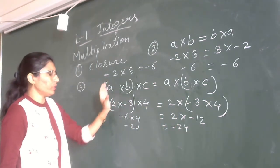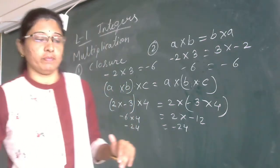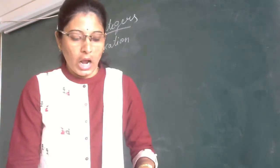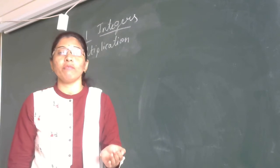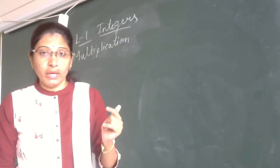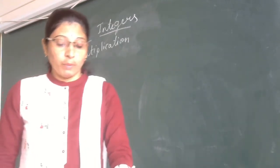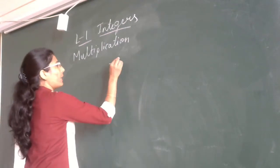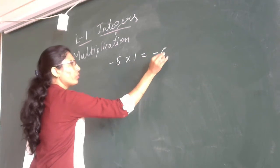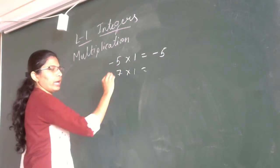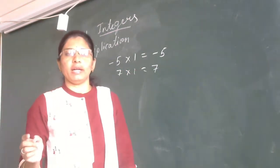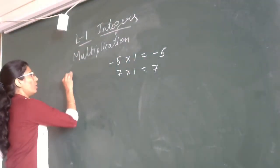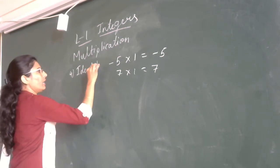The fourth property is identity property. That means if any integer is multiplied with 1, the result will be the integer itself. The product of an integer and 1 is the integer itself. For example, minus 5 into 1 is minus 5, and 7 into 1 is 7. Any integer multiplied with 1 gives the same integer. That is the identity property.